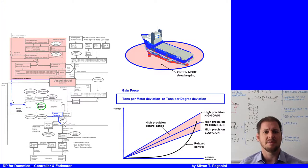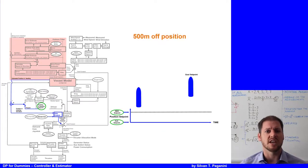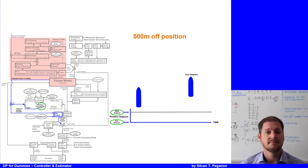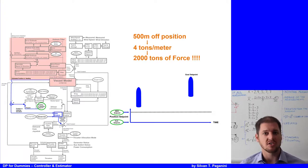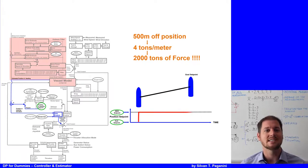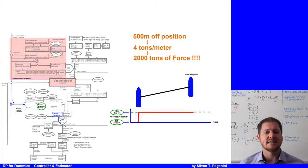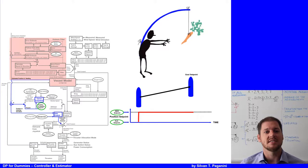But what happens if the DPO puts in a new setpoint — say a move of 500 meters? With a gain of 4 tons per meter offset, 2000 tons would be needed and the engines and thrusters would most probably fail. To avoid this, an instantaneous setpoint — better known as the carat — is calculated.